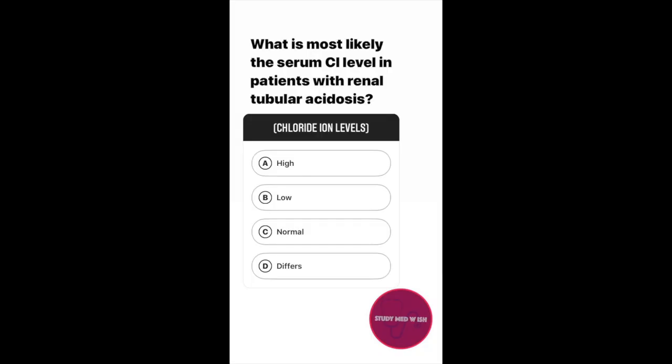Question number three. What is the most likely serum chloride levels in a patient with renal tubular acidosis? Option A: High. Option B: Low. Option C: Normal. Option D: Differs.